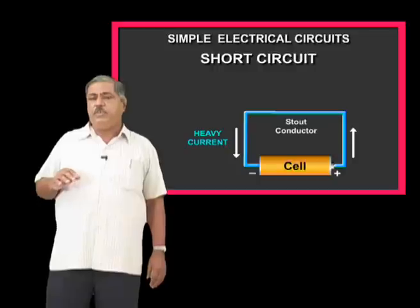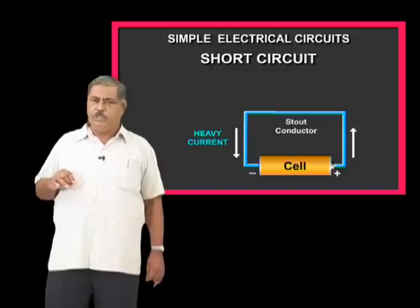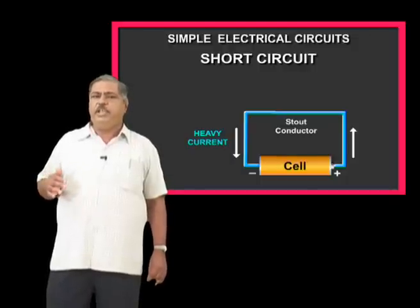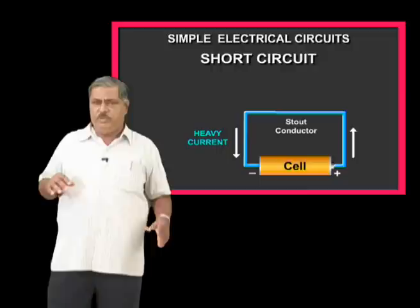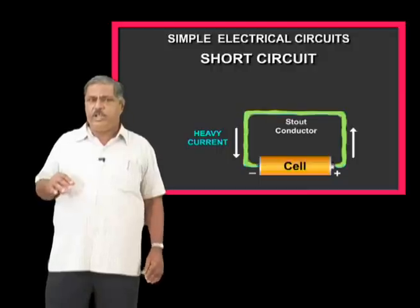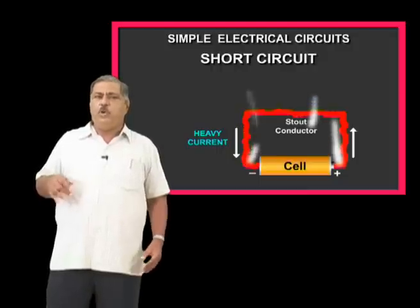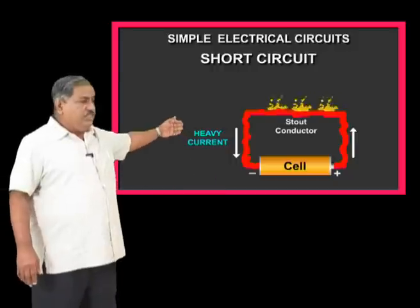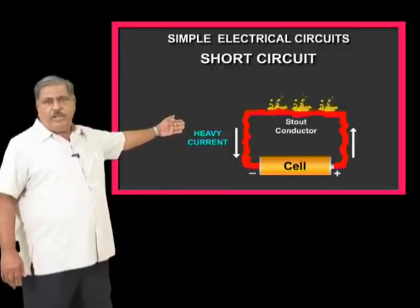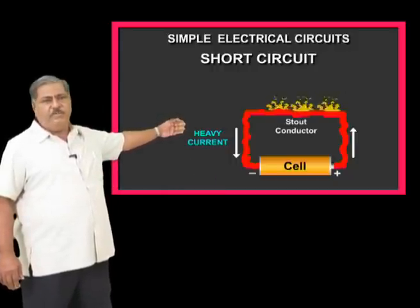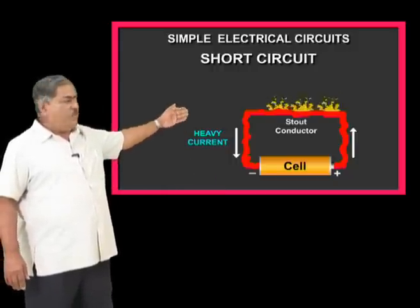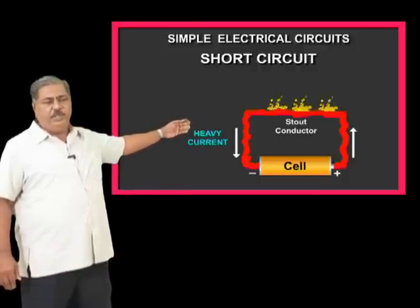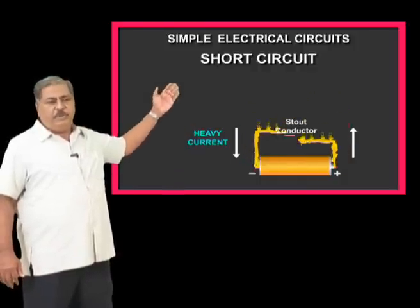In a short circuit, a heavy current flows. The current through the conductor is associated with electrical energy, and the conductor will heat to red heat. The rest of the circuit may be damaged.